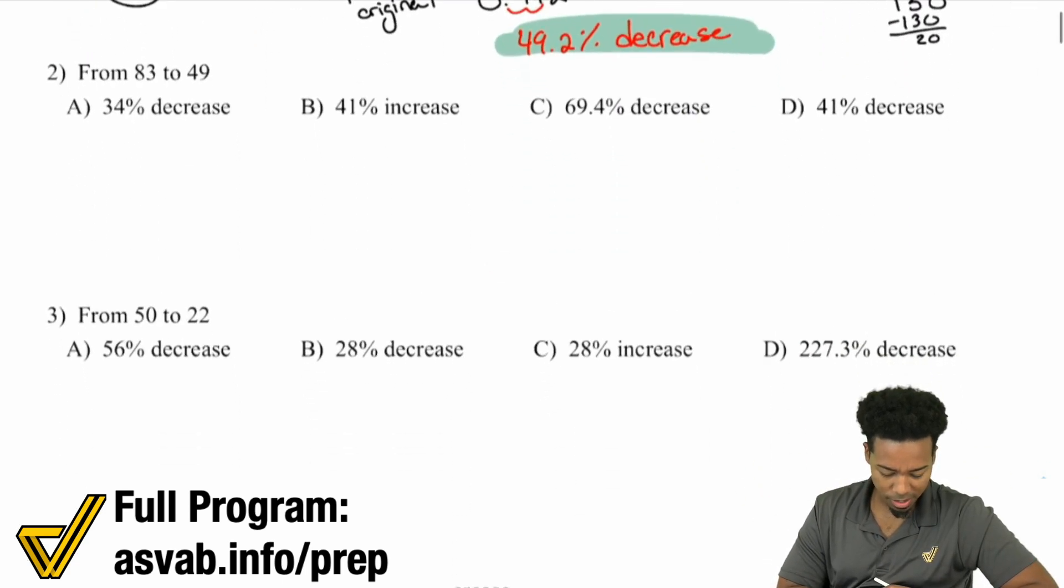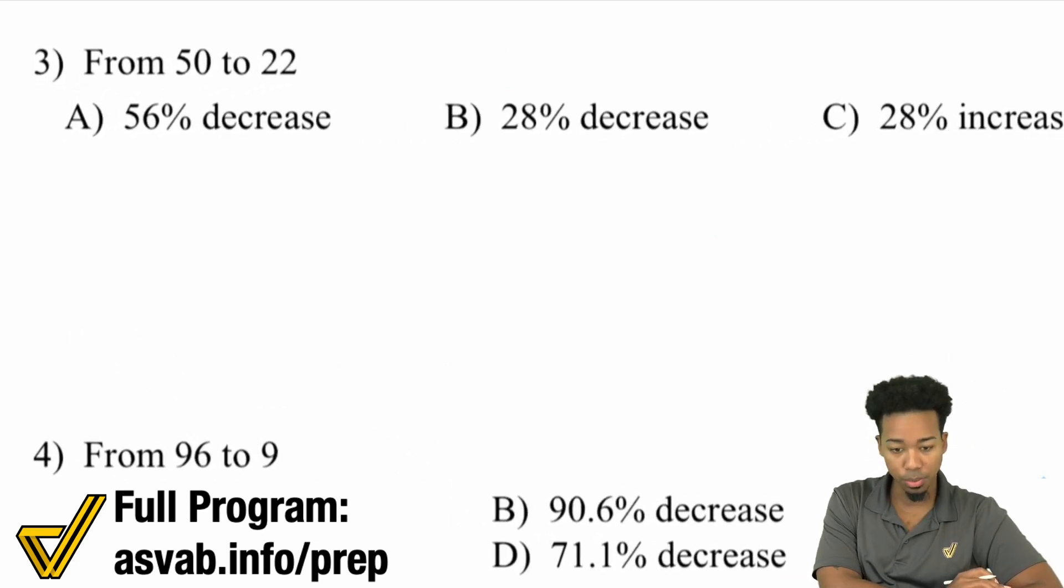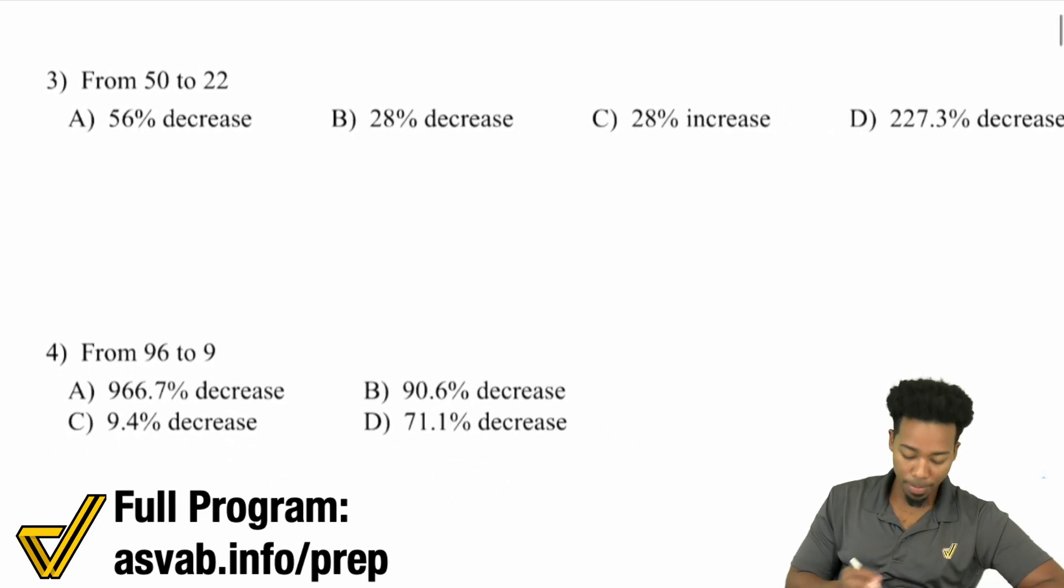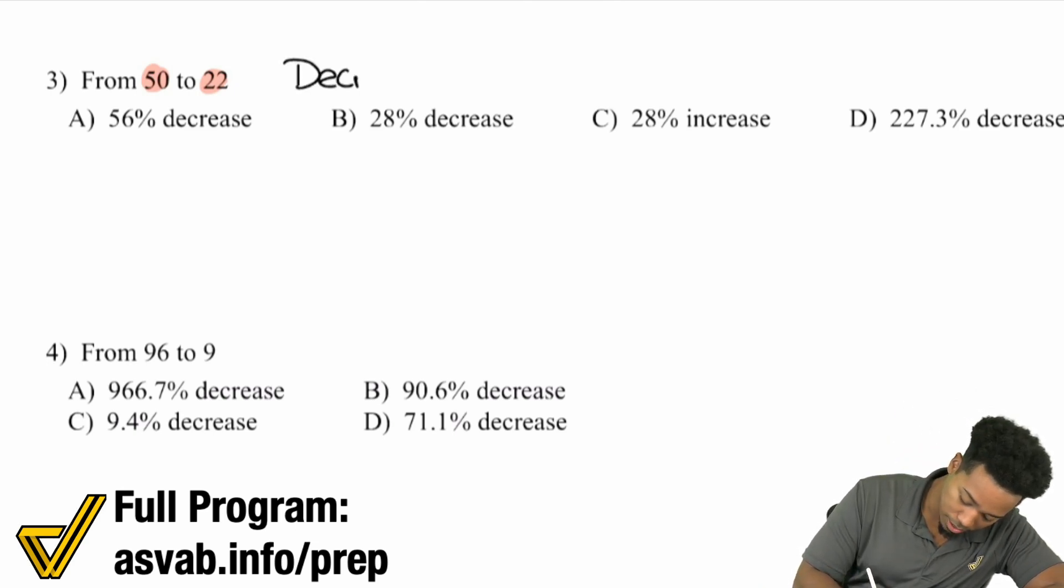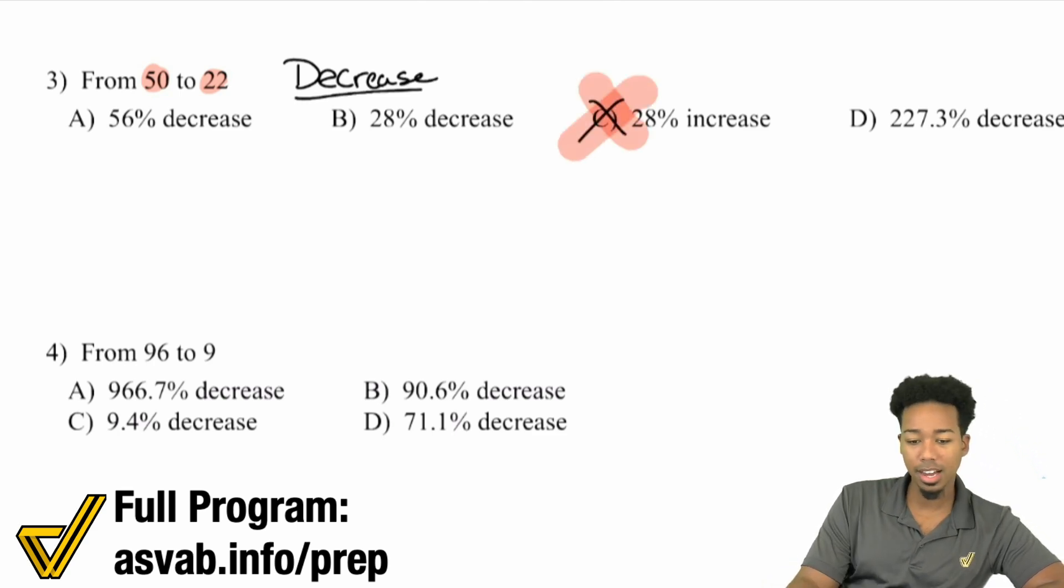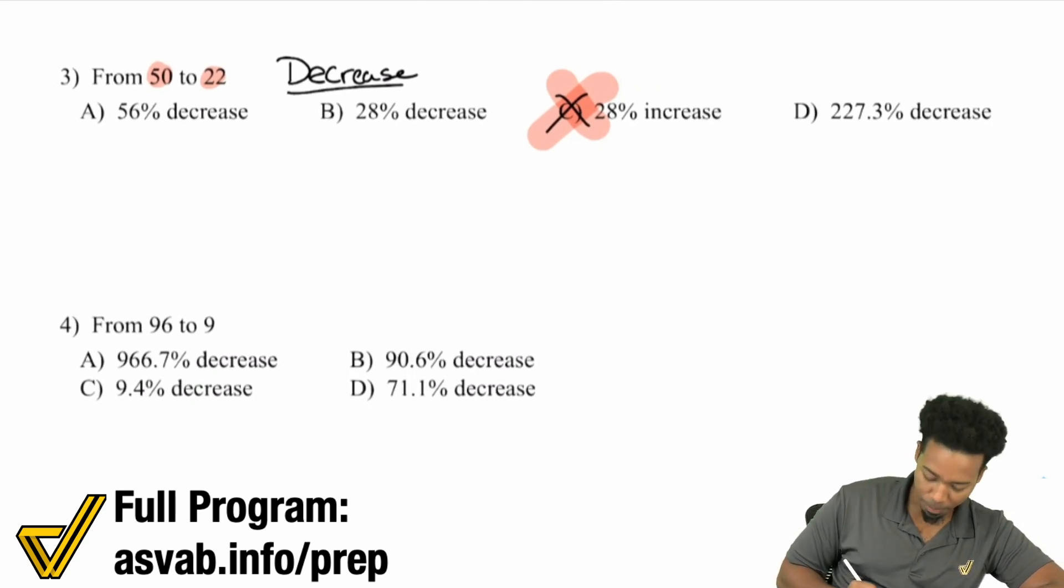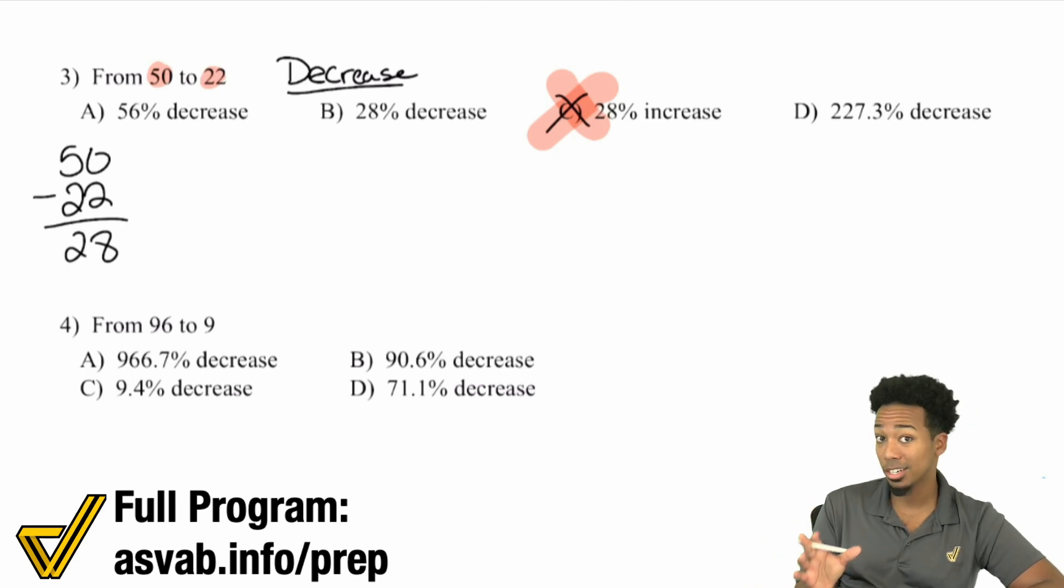Let's do a couple more problems. Looking at from 50 to 22, if we're trying to find if it's a percent increase or decrease, you start at 50 and go down to 22—that's a decrease, an absolute decrease. So we understand it's not an increase, you're definitely going down. But how far down did you go? 50 minus 22 is 28. So it was a 28 point decrease, not a percent decrease. You went down by 28 units.